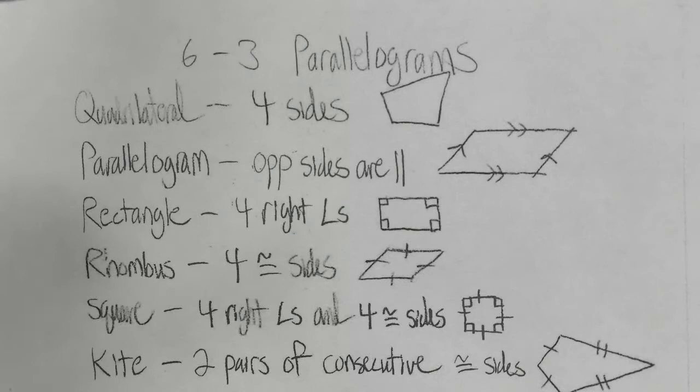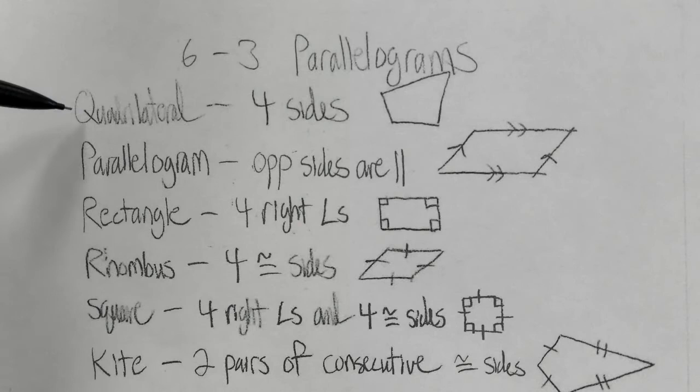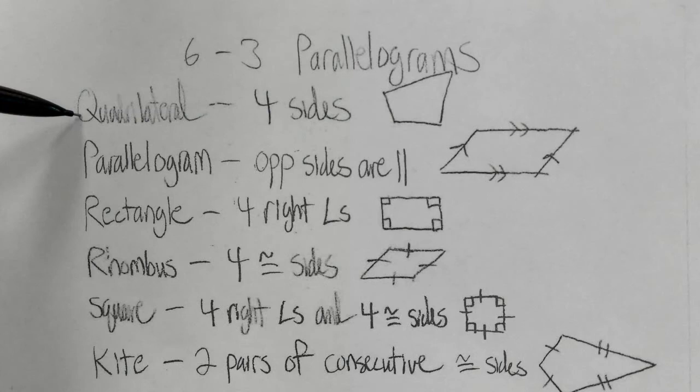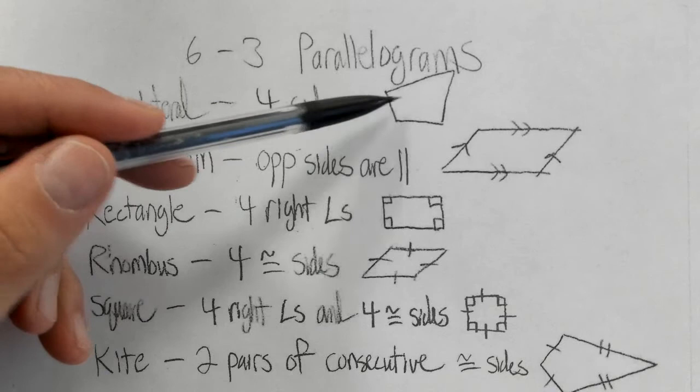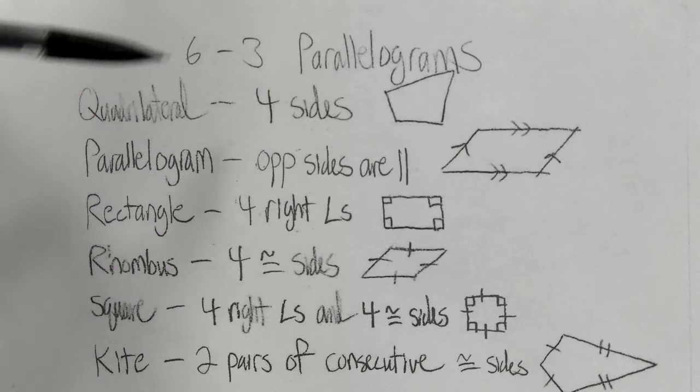We're going to look at the list and define all of the different four-sided figures. The first one is called a quadrilateral. If it has four sides, it is a quadrilateral — that is the definition. A quadrilateral can look like this: it has four sides, the angles don't have to be any certain thing, the sides don't have to be any certain length. If it has four sides, it's a quadrilateral.